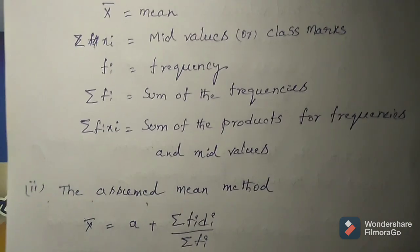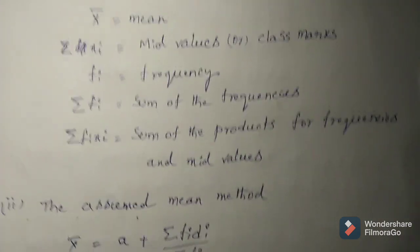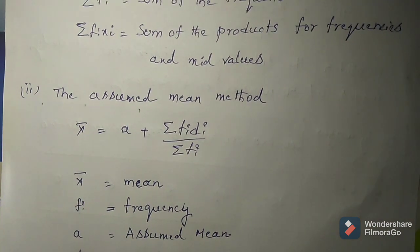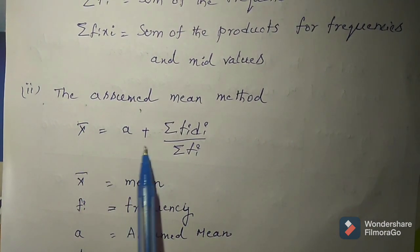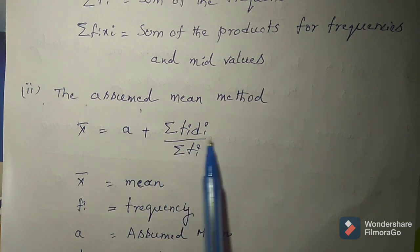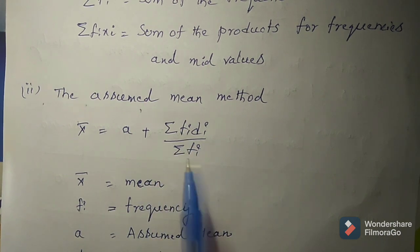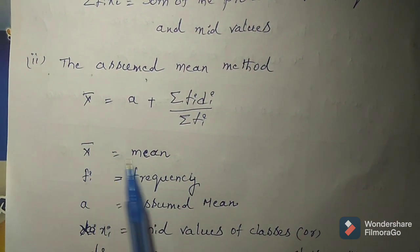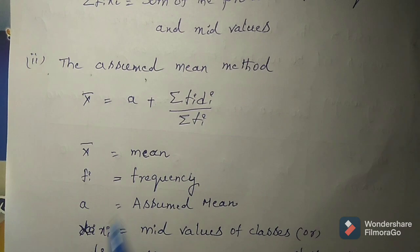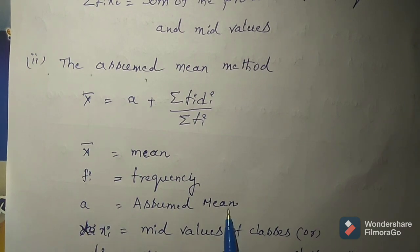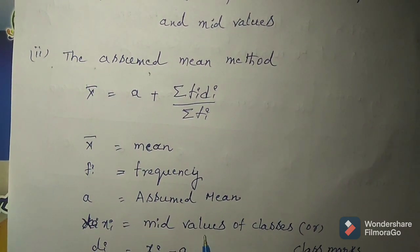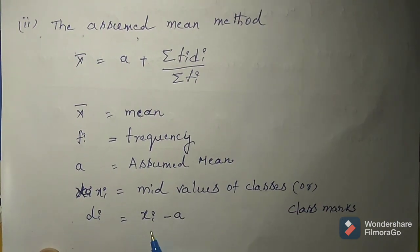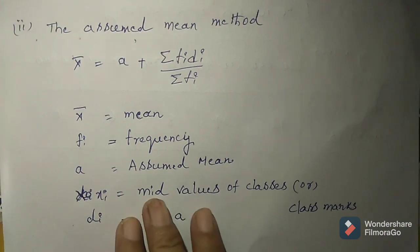Then the second method is the assumed mean method. The formula is: x̄ equals a plus sigma fi di by sigma fi. Then you can explain each term. x̄ means mean, fi means frequency, a means assumed mean, xi means mid values of classes or class marks, di equals xi minus a.